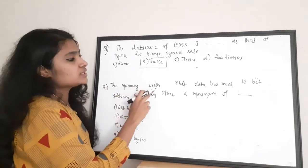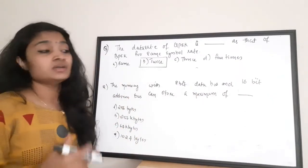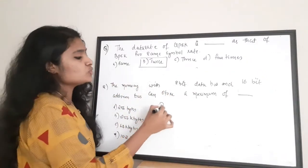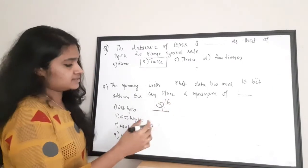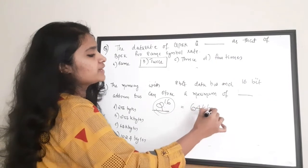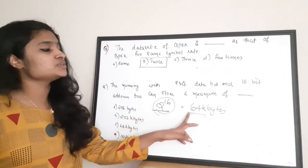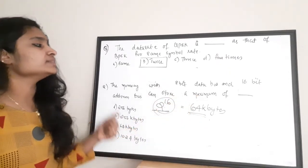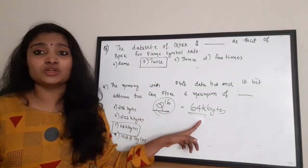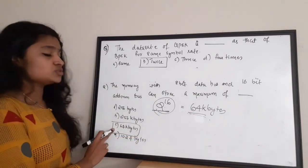Next question: the memory with an 8-bit data bus and 16-bit address bus can store a maximum of how much? Since the address bus is 16-bit, it can store 2^16 bytes, which equals 64 kilobytes. So this memory unit can store a maximum of 64 kilobytes. The correct answer is option C.